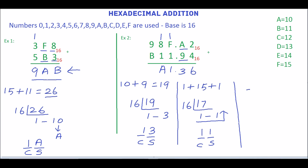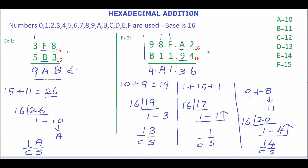Next we will add 9 and B. B is equivalent to 11, so 9 plus 11 is 20, which is not a hex number. So convert this into hex by dividing 20 by 16. The quotient is 1 and the remainder is 4, written from bottom to top, giving 14. 4 is the sum and 1 is the carry. Write 4 here and carry 1 here.